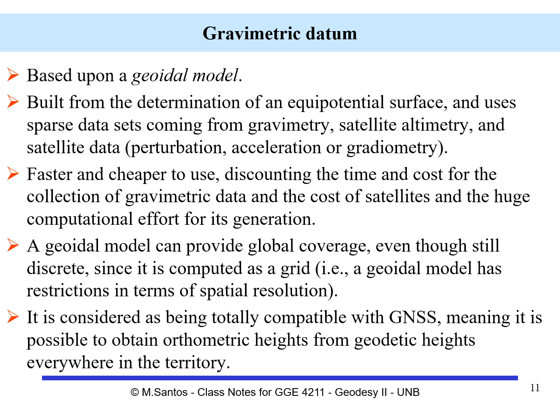Now let's talk about the gravimetric datum. The gravimetric datum is based on the geoidal model. The way to build it is to start with datasets that will come from gravimetry, satellite altimetry, and different types of satellite data — they can be orbit perturbations, acceleration as the GRACE mission does, or gradiometry as the GOCE mission used to do.